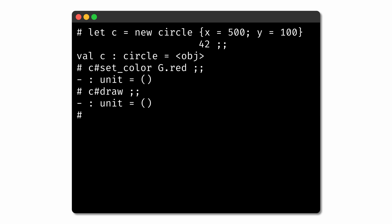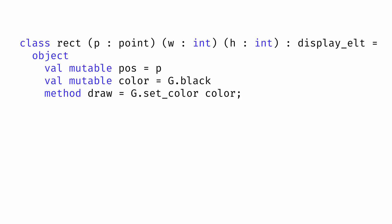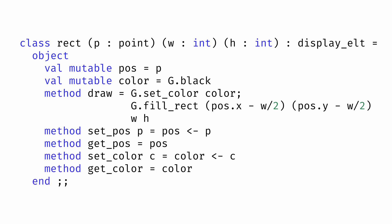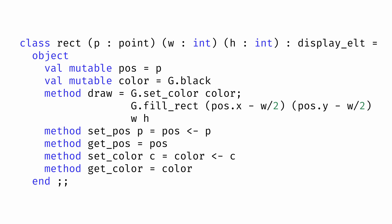In the same way that we've defined our class for circles, we could define classes for other shapes too. Here, for example, is a class for rectangles that also generates objects of type displayelt. But one thing you might notice is that there's a lot of redundancy between this class and our circle class. In both cases, we've defined instance variables for position and color, as well as functions for getting and setting them. The difference is really just in how these shapes are drawn to the screen. To avoid this redundancy, we can take advantage of a key feature of object-oriented programming: inheritance.